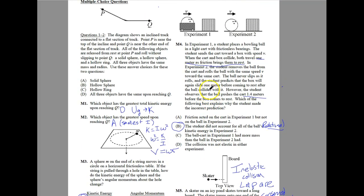For the next question, this is M4. You have an experiment where you have a bowling ball inside a cart and a bowling ball that is not in the cart. So this one is rolling, rotating. And this one is just moving linearly. They tell you all those things, and there is one meter. Both travel one meter as friction brings them to rest. The ball never slips and rolls, and the student predicts that the box will again slide one meter before coming to rest after the ball collides with it.